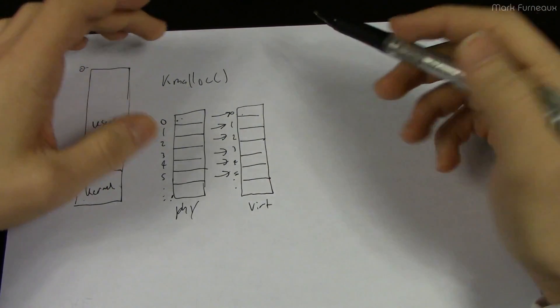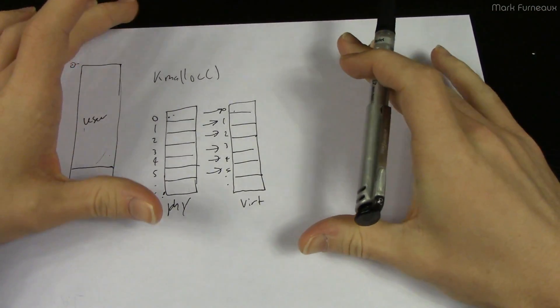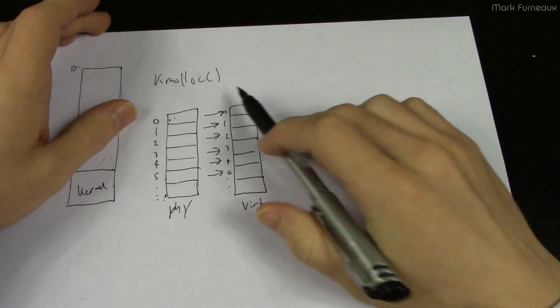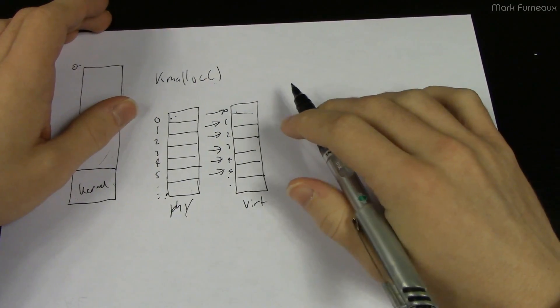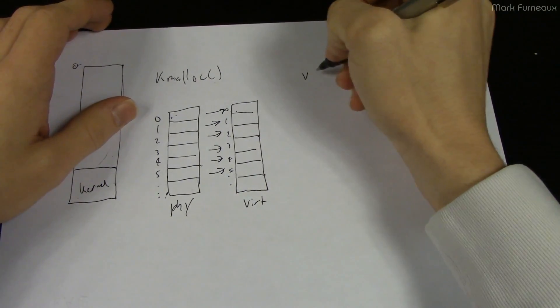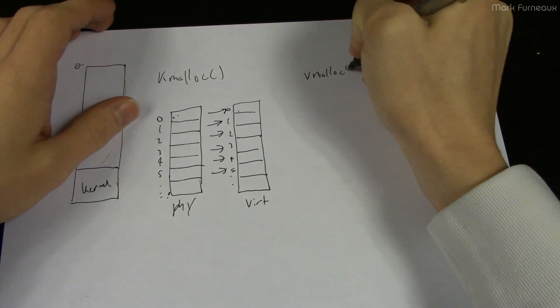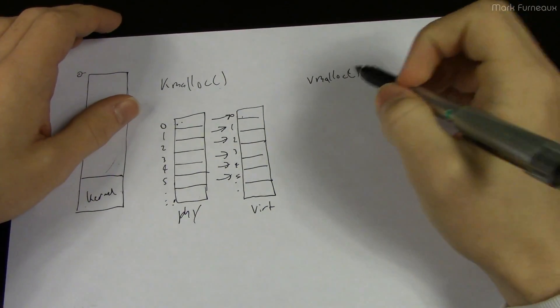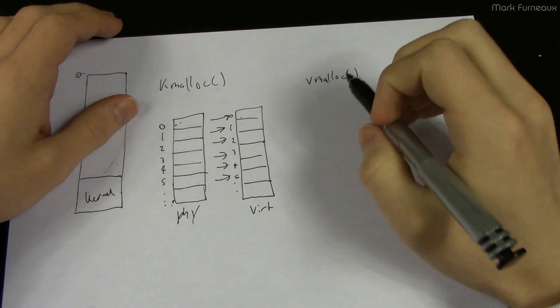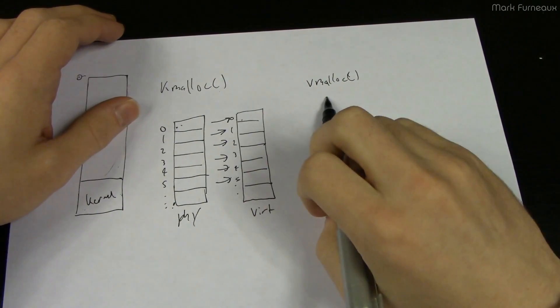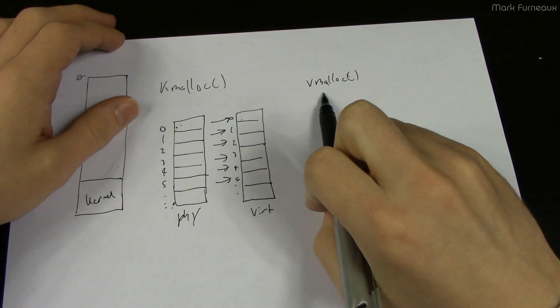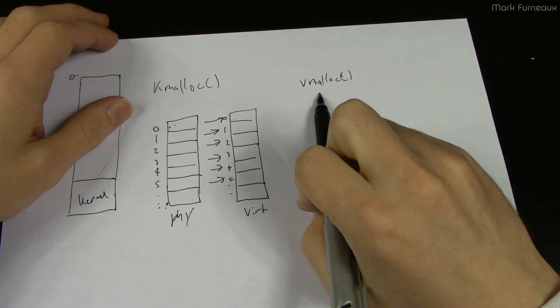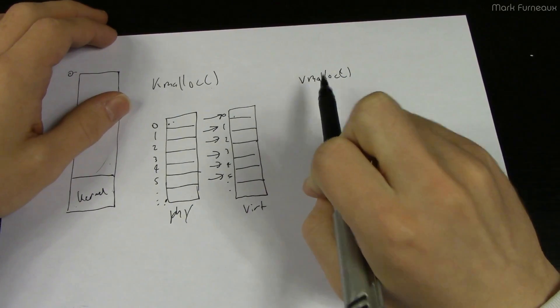Anyway ZFS needs large, large amounts of memory. So kmalloc doesn't really work well for it. And there is another function in Linux kernel to allocate memory and that is vmalloc. And vmalloc is kind of discouraged, it's actually very discouraged to use this function.